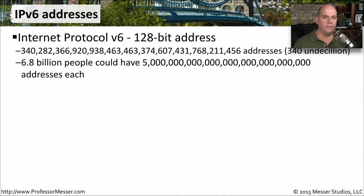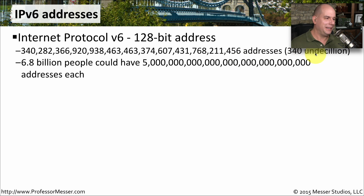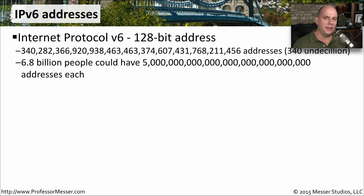IPv6 stands for Internet Protocol Version 6. It is a 128-bit address, which is much larger than our traditional IPv4 addresses. One of the reasons we created IPv6 is so that we could have many, many more addresses available — 340 undecillion addresses. If there are 6.8 billion people, they all could have this many addresses each, so IPv6 is designed to handle our addressing needs well into the future.